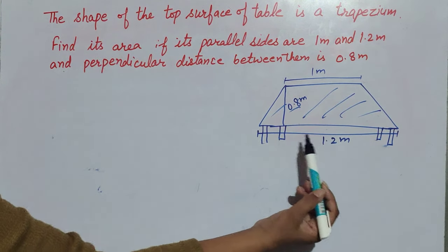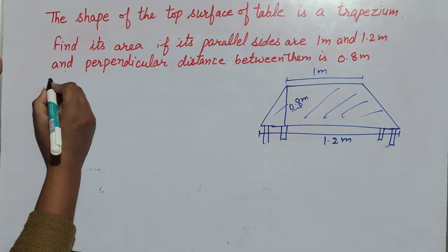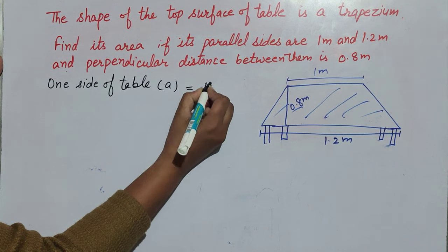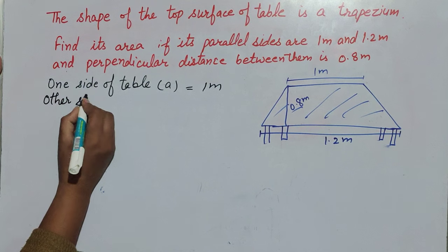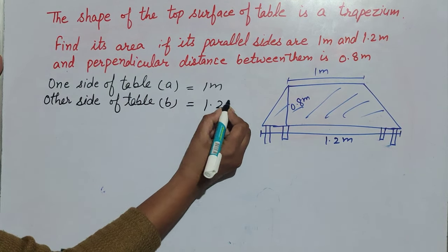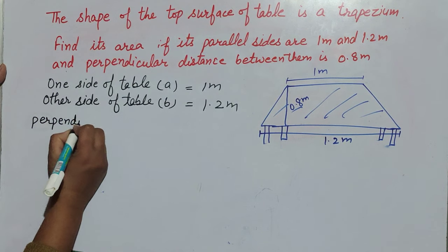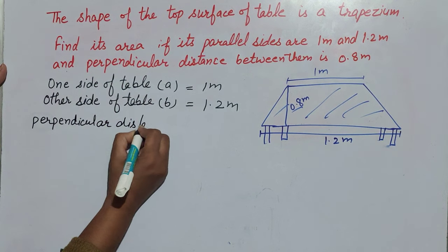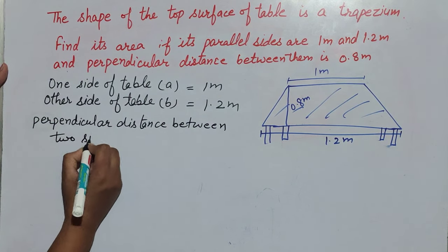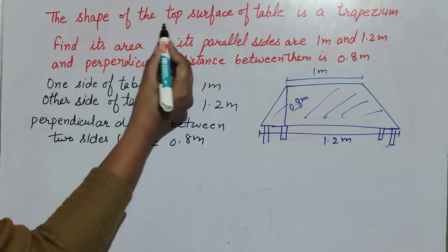The length of one side is 1 meter and the other side is 1.2 meter, and the perpendicular distance is 0.8 meter. We have to find the area of this table. One side of the table we say is 'a', and it is equal to 1 meter. The other side of the table is 'b', and it is equal to 1.2 meter. The perpendicular distance between two parallel sides of the table we say is 'h', and it is given as 0.8 meter.